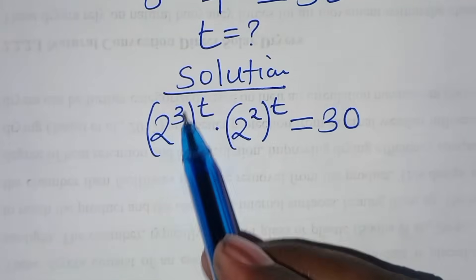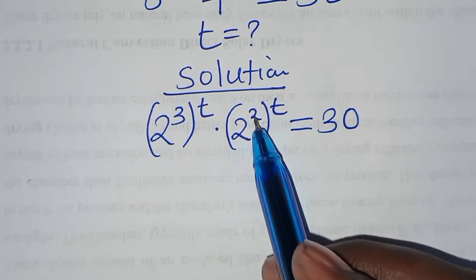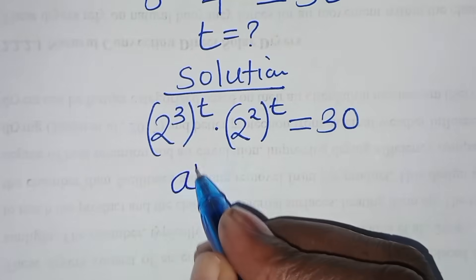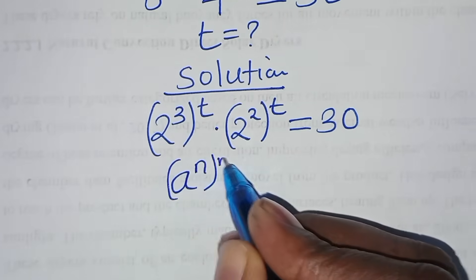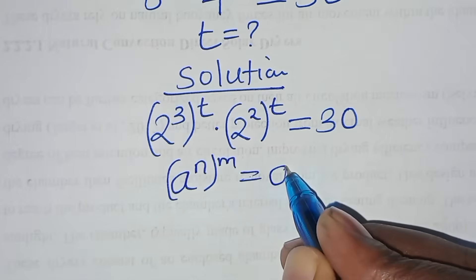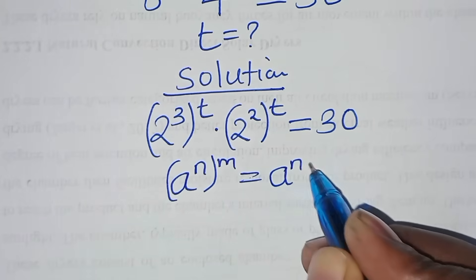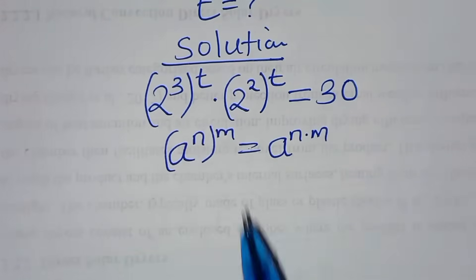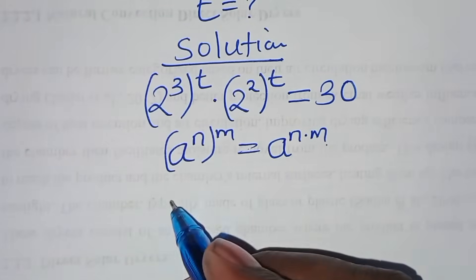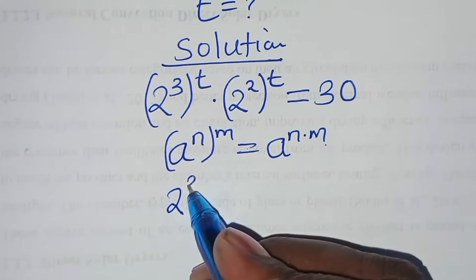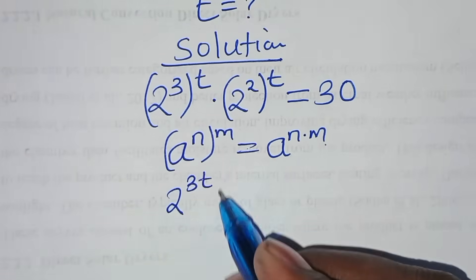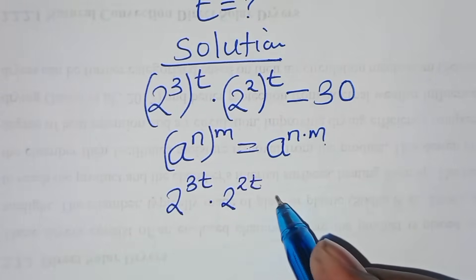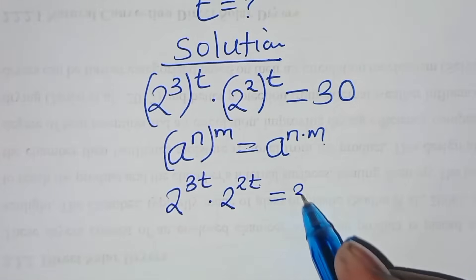Now, 2 to the power 3 raised to the power t and 2 to the power 2 raised to the power t are in the form of a to the power n raised to the power m, which we can express as a to the power n times m. Applying this exponential property, we have 2 to the power 3t times 2 to the power 2t, equal to 30.